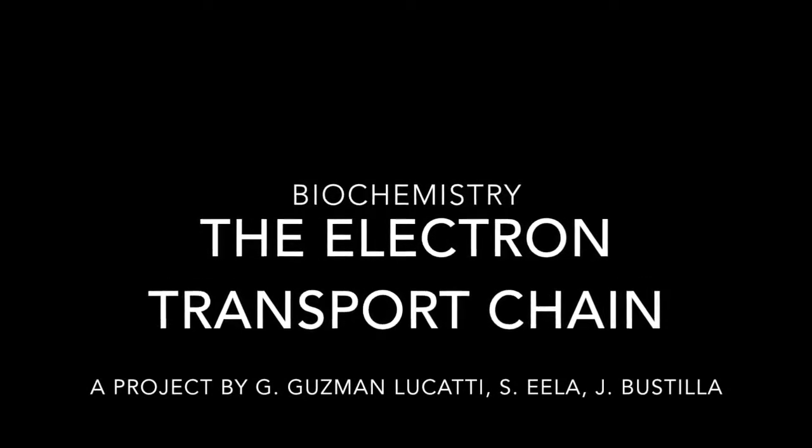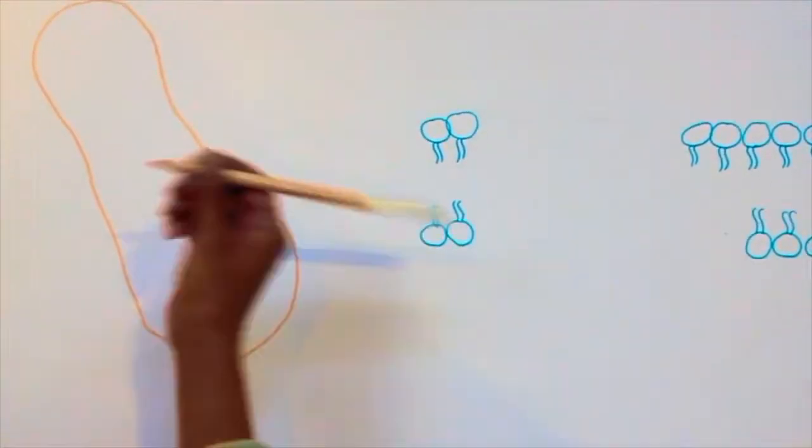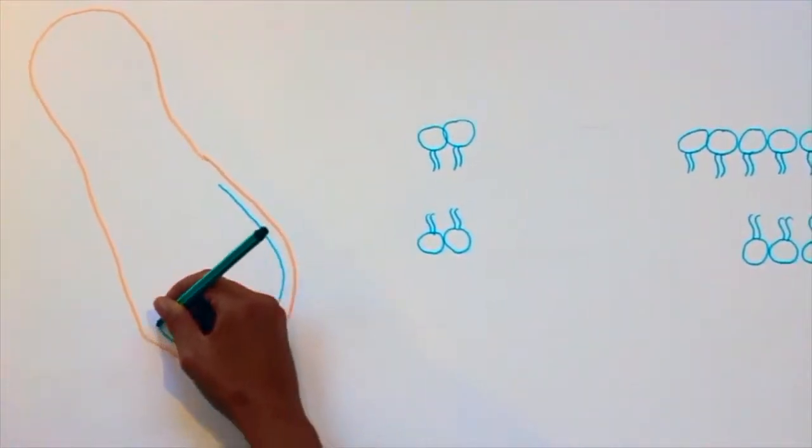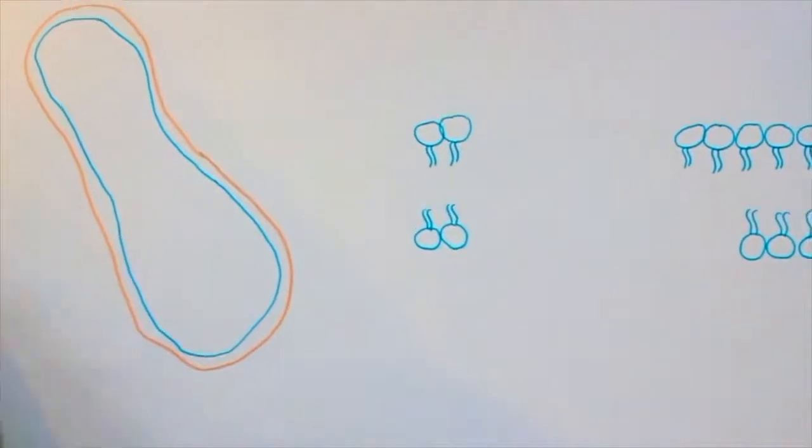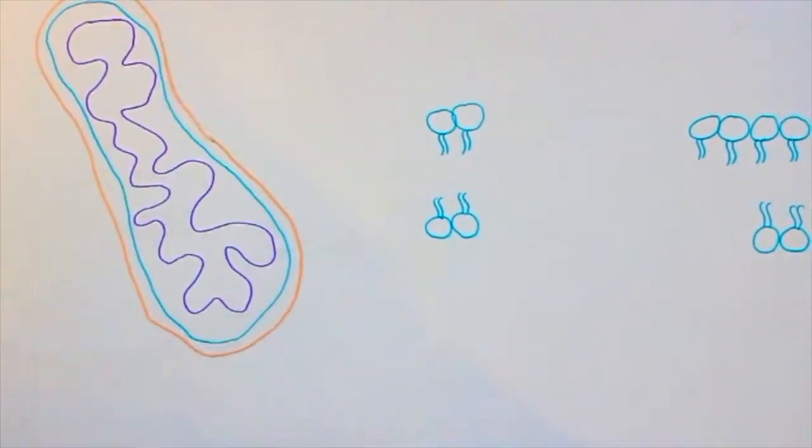The electron transport chain occurs in the mitochondria, the powerhouse of the cell, composed by an outer membrane and an inner membrane. Inside this, there is a space inside this purple line called the matrix.